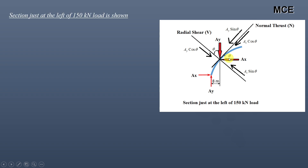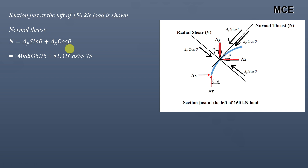Since both Ay sin θ and Ax cos θ act in the same direction along the normal thrust, the normal thrust equals Ay sin θ + Ax cos θ. Substituting Ay = 140 kN, Ax = 83.33 kN, and θ = 35.75°: Normal thrust = 140 × sin(35.75°) + 83.33 × cos(35.75°) = 149.42 kN.